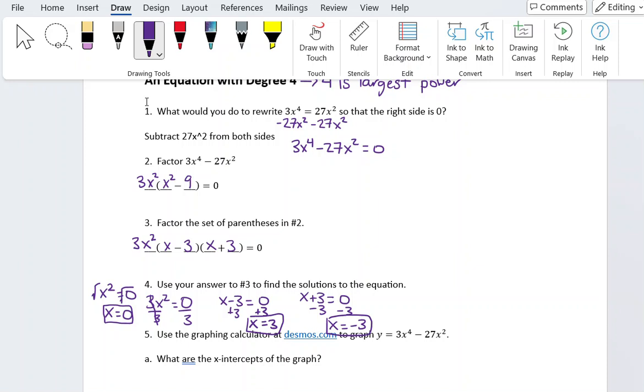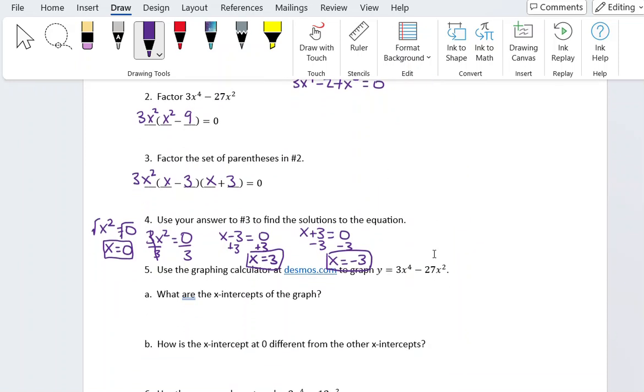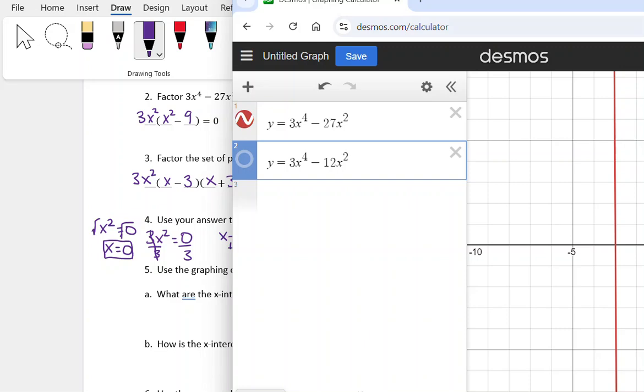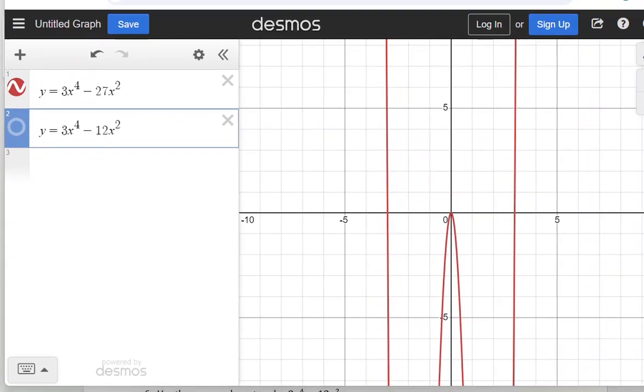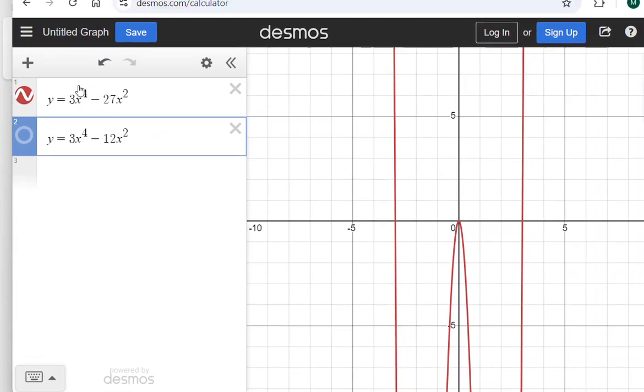Now we're going to graph this on the graphing calculator at Desmos.com. And the question is, what are the x-intercepts of the graph? So let me pull that over here. So here's my graph: 3x to the fourth minus 27x squared.